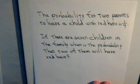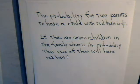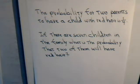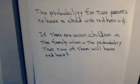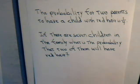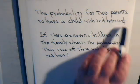In this video, we want to consider this problem. The probability for two parents to have a child with red hair is one-fourth. The question asked is: if there are seven children in the family, what is the probability that two of the children will have red hair? This is a Bernoulli-type probability problem. We can consider the event of having red hair as a success and not having red hair as a failure. The probability of success is one-fourth.